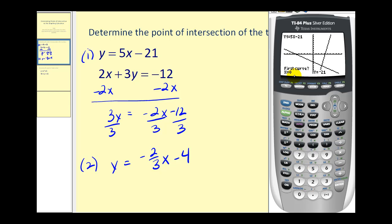Now it's going to ask three questions: the first curve, the second curve, and then for a guess. If we only have two graphs on the screen, we can just press enter for the first curve, enter for the second curve, and enter again for the guess. We can see the point of intersection is the point (3, -6).